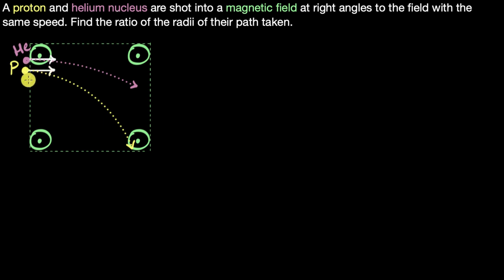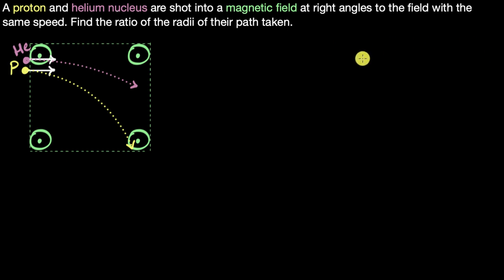If there are no forces acting on the particle, it would just continue to go in a straight line. But if there are forces acting on it, we can use Newton's laws to figure out how the force affects the path. There's only one force because the particle is entering a magnetic field — that is the magnetic force, the Lorentz force, given by F equals Q times V cross B.